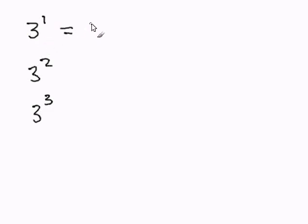Now 3 to the first power is just 3 because there's only one 3. 3 to the second power is 3 multiplied by itself and the 2 indicates that there are two 3's. So 3 times 3 is 9.